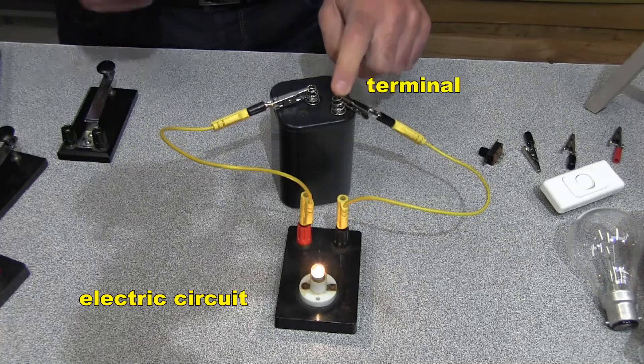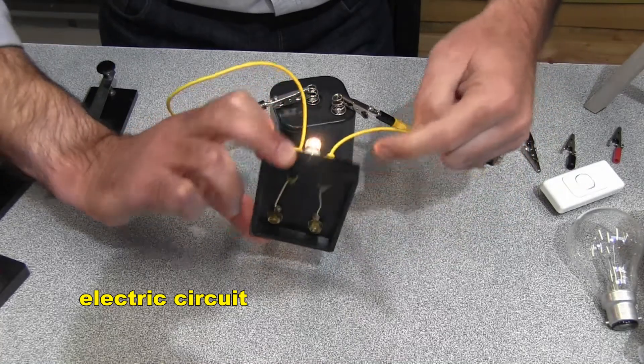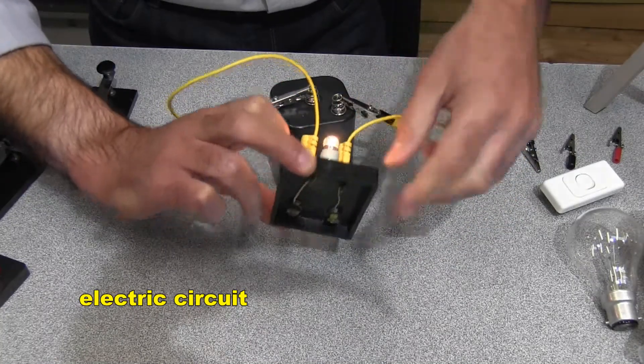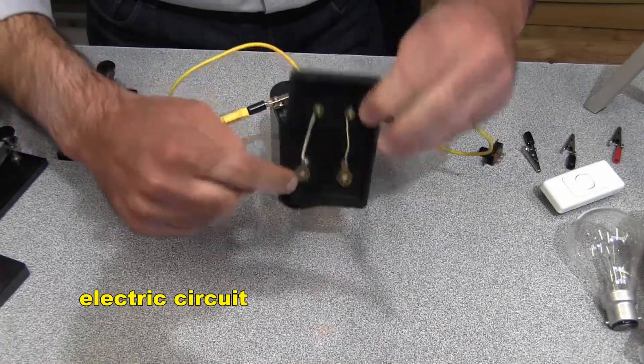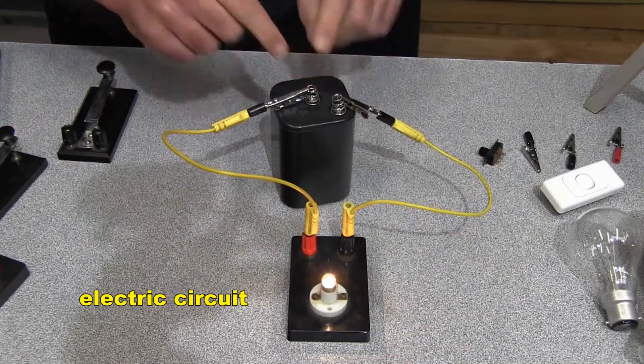From this so-called terminal, through this wire, down, through this wire, up and through the light globe, down and through this wire, and then up and then through this wire, and then back to this terminal of the battery.